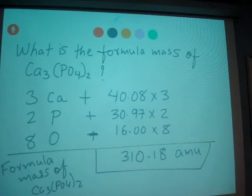40.08, that number comes from the periodic table. 30.97, that number comes from the periodic table. So you need to refer to the periodic table for that particular element.